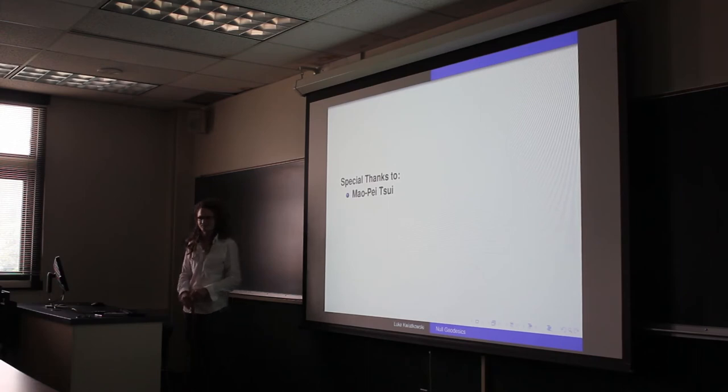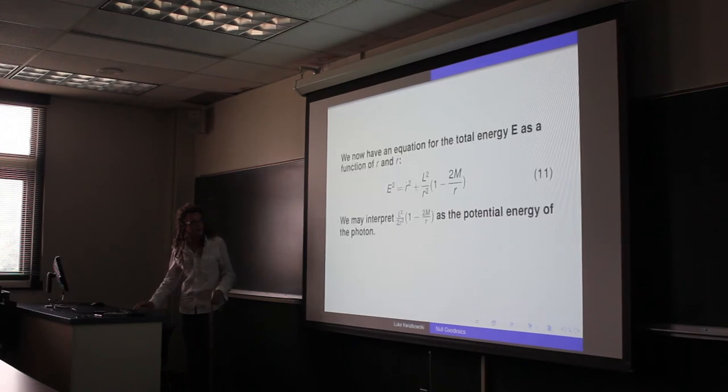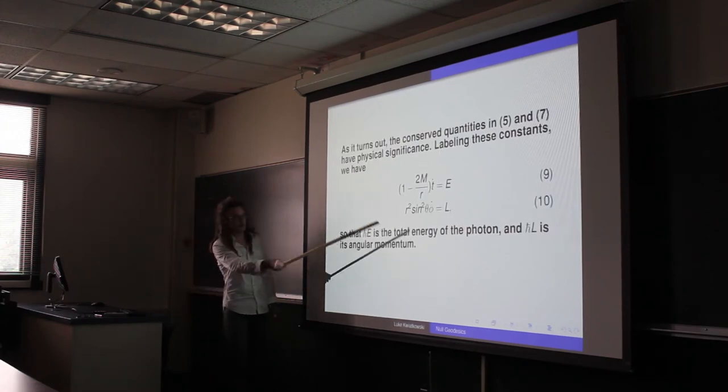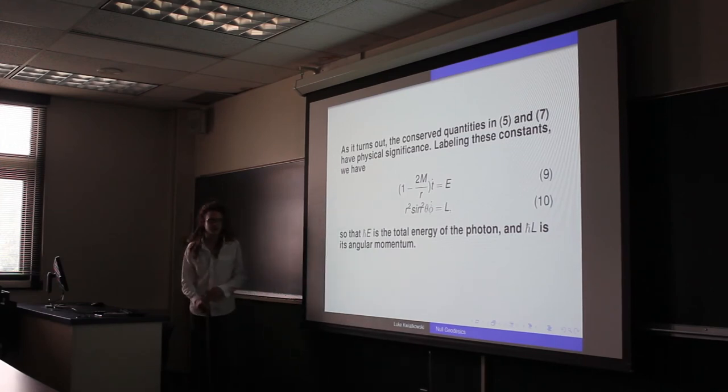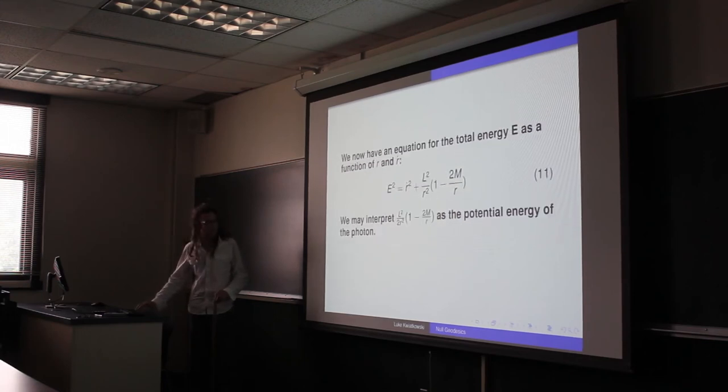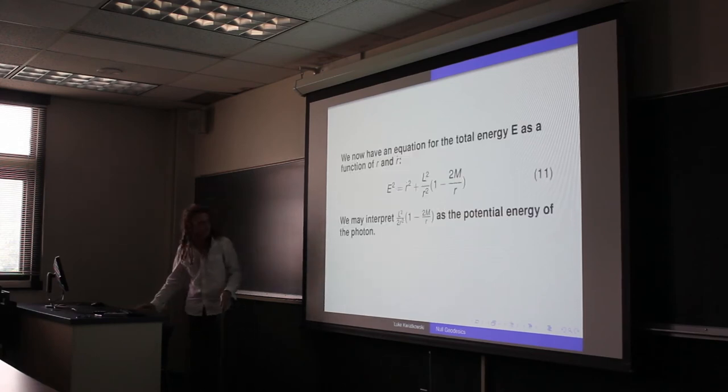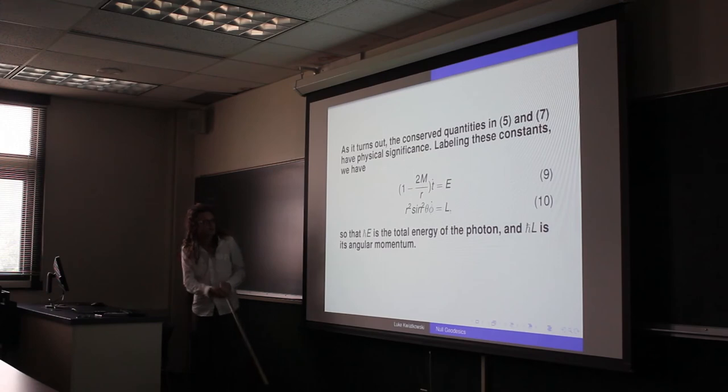Any questions for Luke? What is L? L gives us the angular momentum, and so if we take h-bar times L, that represents the angular momentum of the photon. And that barrier is due to centrifugal? Yeah, so it comes from this.